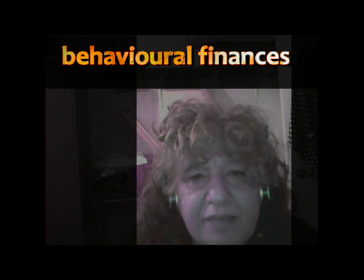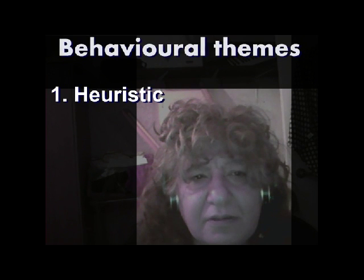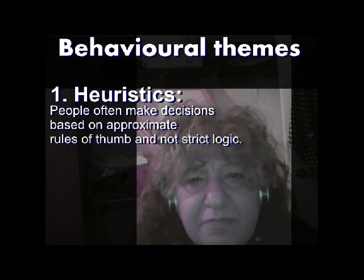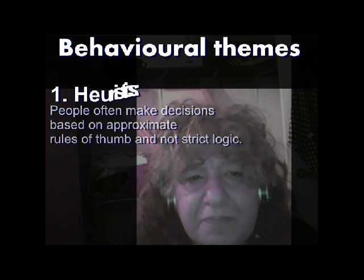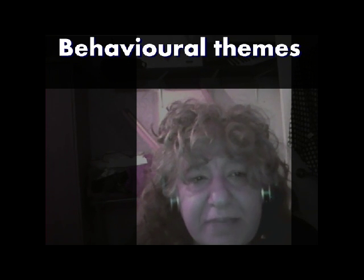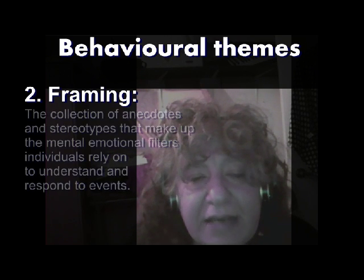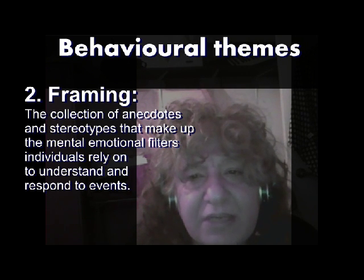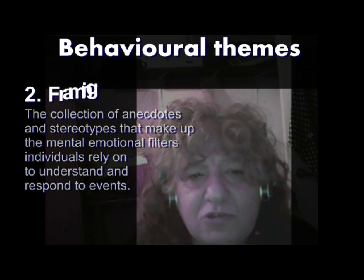For example, I would like you to explain to me what it means that there are three prevalent themes in behavioural finance. Heuristics explains how people often make decisions based on approximate rules of thumb and not strict logic. Or framing — explained as the collection of anecdotes and stereotypes that make up the mental emotional filters individuals rely on to understand and respond to events.